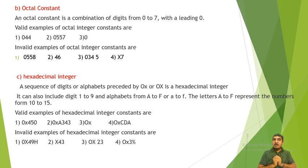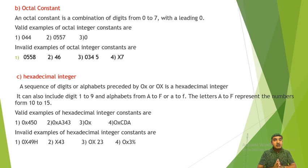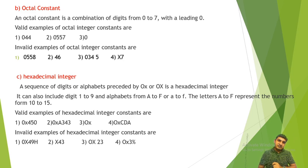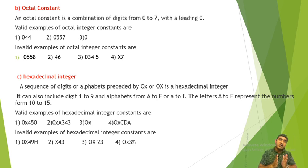Next is the octal integer constant. An octal constant is a combination of digits from 0 to 7 with a leading 0. Valid examples: 044 — valid because there is a leading 0 and the digits are in octal range; 0557 — valid because it is a combination of digits from 0 to 7; and simply 0 — also a valid octal integer constant.